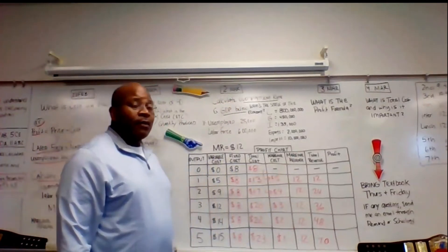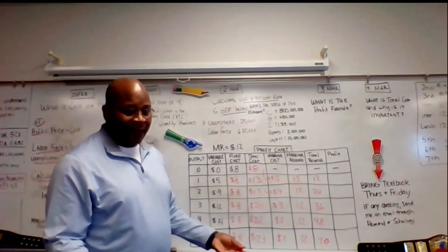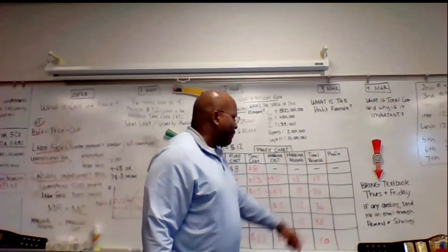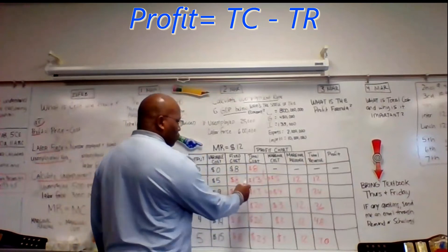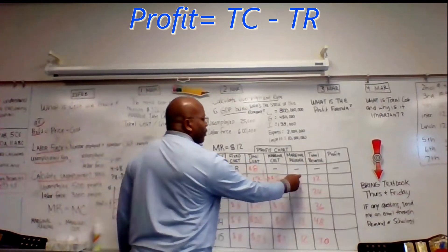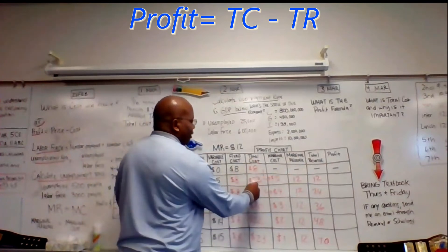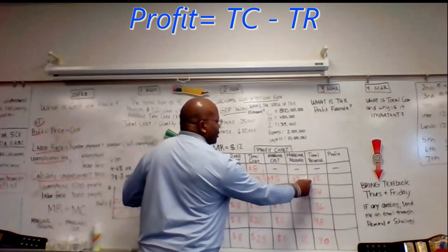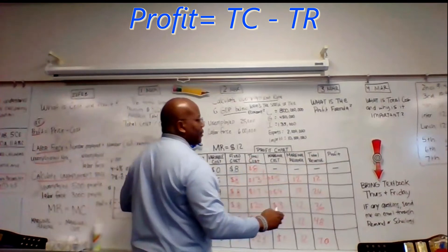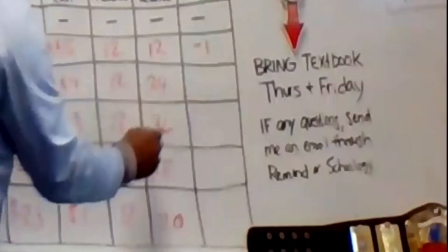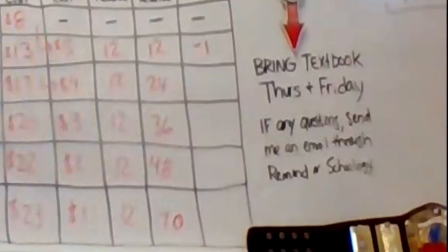Now, let's see if we got profit. To do profit, we're going to take the total cost, subtract it from total revenue. So, for one item, my total cost was $13. My total revenue was $12. I lost on this first unit. I lost money on the first unit.